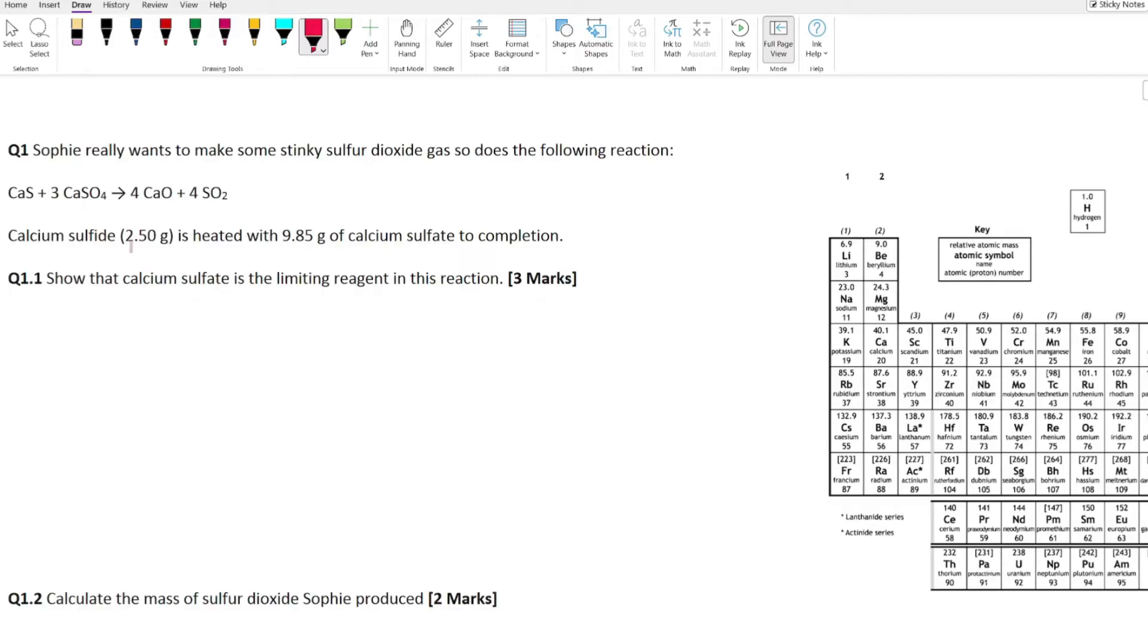We got this reaction scheme going out. Calcium sulfide, we got 2.5 grams of that, is heated with 9.85 grams of calcium sulfate and the reaction is carried out to completion.